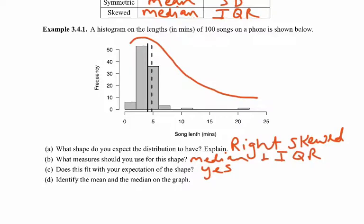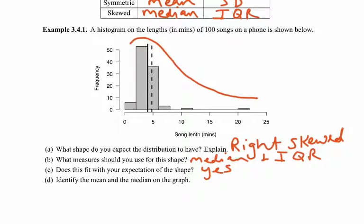Most songs are going to be around two to three minutes, with a small number that might be longer. Now, identify the mean and the median on the graph. There's a dashed line and a solid line — we need to determine which one is the mean and which is the median. Think about which would be higher: the mean or the median.